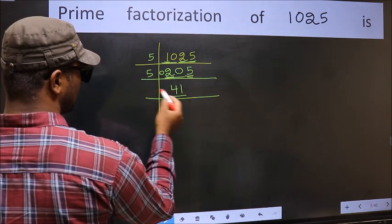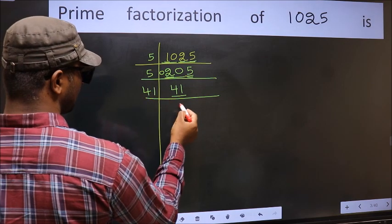Now, here we have 41. 41 is a prime number, so 41 once, 41.